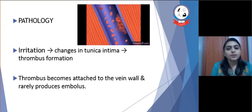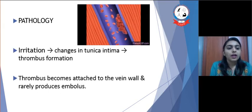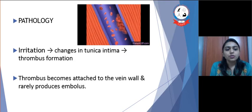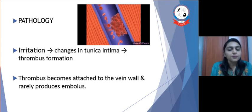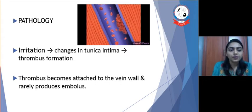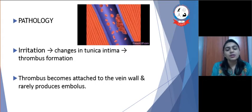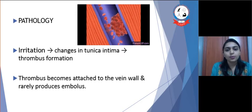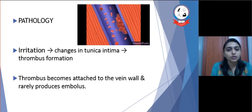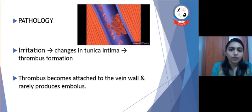Regarding pathology: any kind of irritation causes changes in the tunica intima, which leads to thrombosis formation. The difference between superficial venous thrombosis and deep venous thrombosis is that the thrombosis usually becomes attached to the vein wall and rarely produces an embolus, as there is less pressure inside the superficial vein than that of the deep vein.